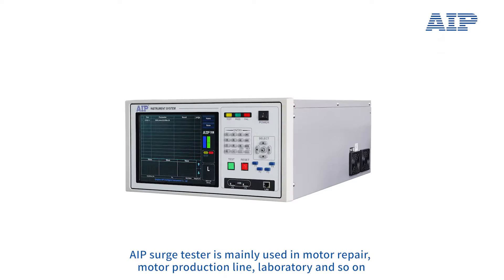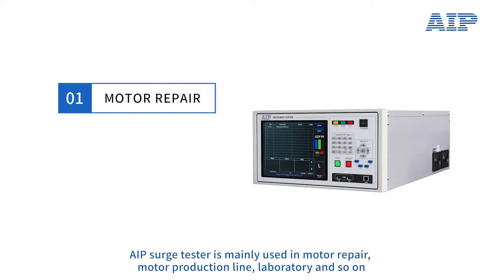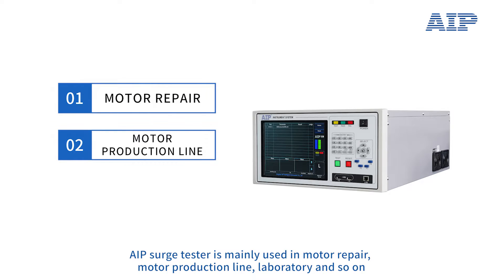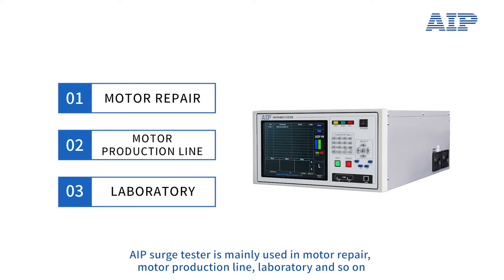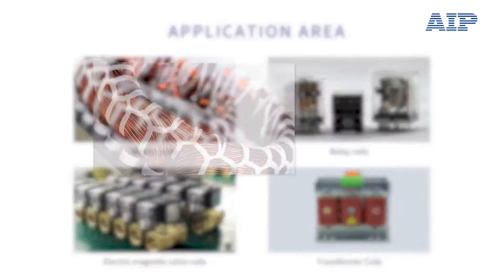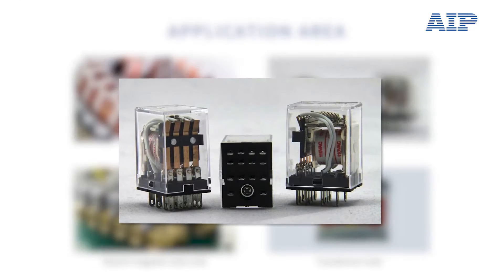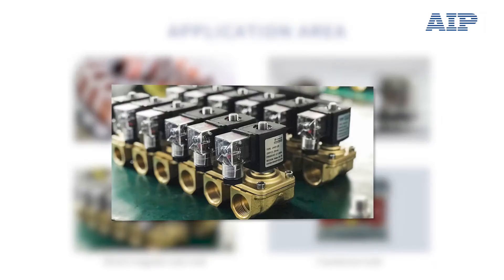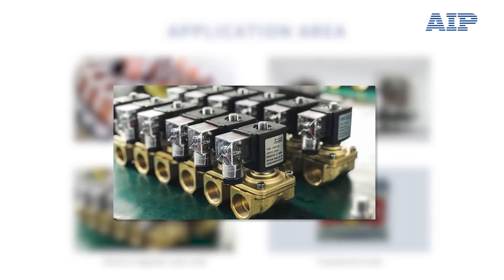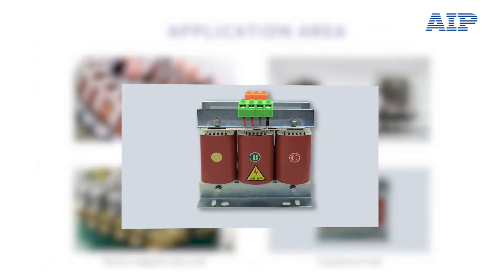AIP Surge Tester is mainly used in motor repair, motor production line, laboratory, and so on. It is used for Motor Coils, Relay Coils, Electromagnetic Valve Coils, and Transformer Coils.